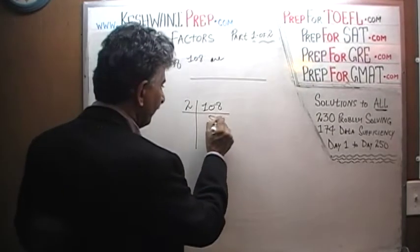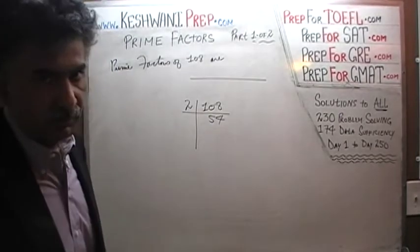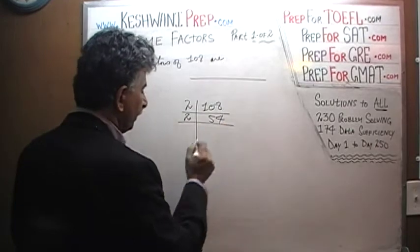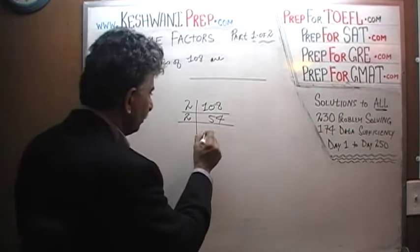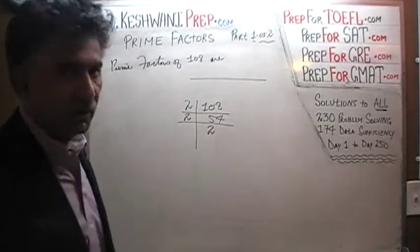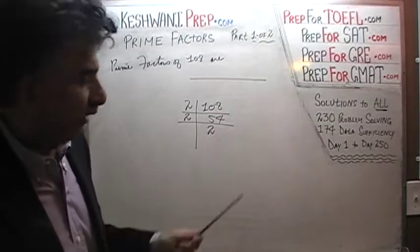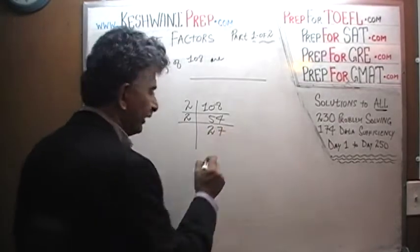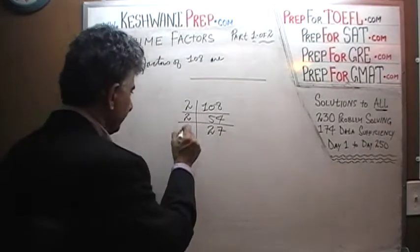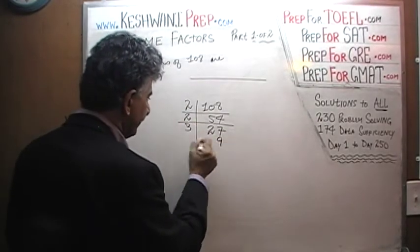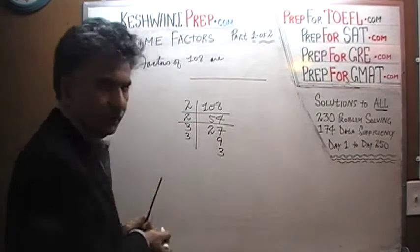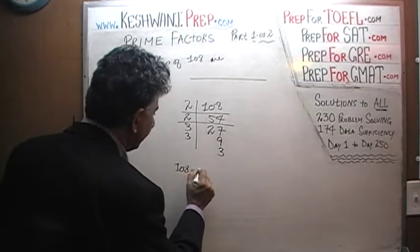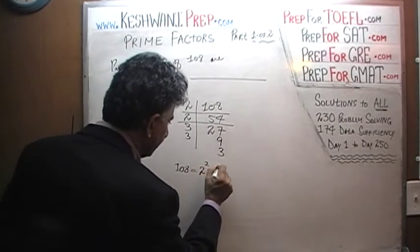Dividing 108 by 2 gives us 54. Again, 54 is divisible by 3, but we divide by 2 again. How many 2's in 5? 5 has two 2's; the remaining 1 joins the 4 to become 14. How many 2's in 14? 14 has seven 2's. We can't divide by 2 anymore, so now we divide 27 by 3: 27 has nine 3's. Dividing by 3 one more time gives us 3. So 108 can be written as 2 squared times 3 cubed.